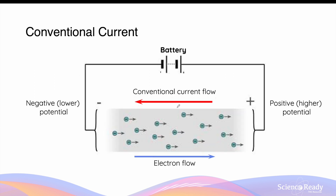This reiterates the difference in direction between conventional current, which flows from positive to negative or lower potential, and electron flow, which being negative charges, is always opposite to conventional current — flowing from the negative lower potential of the battery towards the higher positive potential. It is very important to identify the direction of both conventional current flow and electron flow when analyzing an electric circuit.